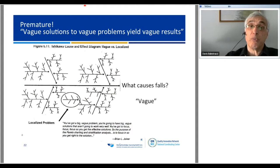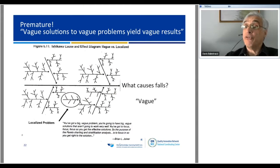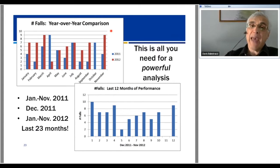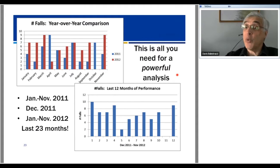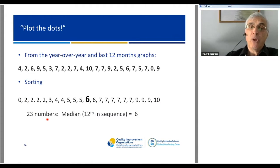We don't panic when we see this and say, 'Time for the cause and effect diagram.' Remember: vague solutions to vague problems get you vague results. Let's understand the process. By having this data—the year-over-year for 11 months coupled with the last 12 months—you can reconstruct the last 23 months of performance. So there it is, the 23 months of performance. I sort it to find the median—23 numbers means it's going to be the 12th in the sorted sequence, 11 smaller, 11 bigger. Let's plot the dots.